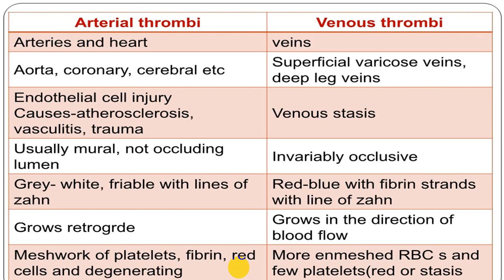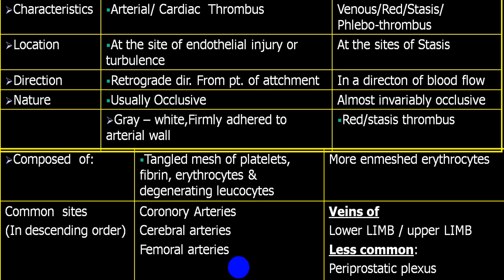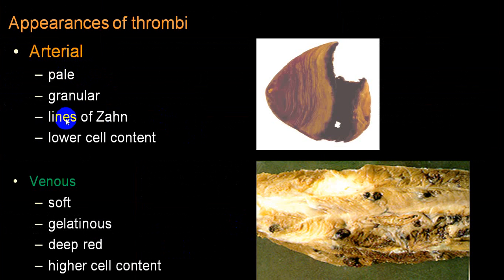Arterial thrombus grows retrograde — towards the heart — while venous thrombus grows in the direction of blood flow, towards the inferior or superior vena cava. Arterial thrombus consists of a meshwork of platelets, fibrin, red cells, and degenerating leukocytes, appearing white and granular with lines of Zahn. Venous thrombus is mainly RBCs with few platelets, appearing soft, gelatinous, and deep red, with high cell content.